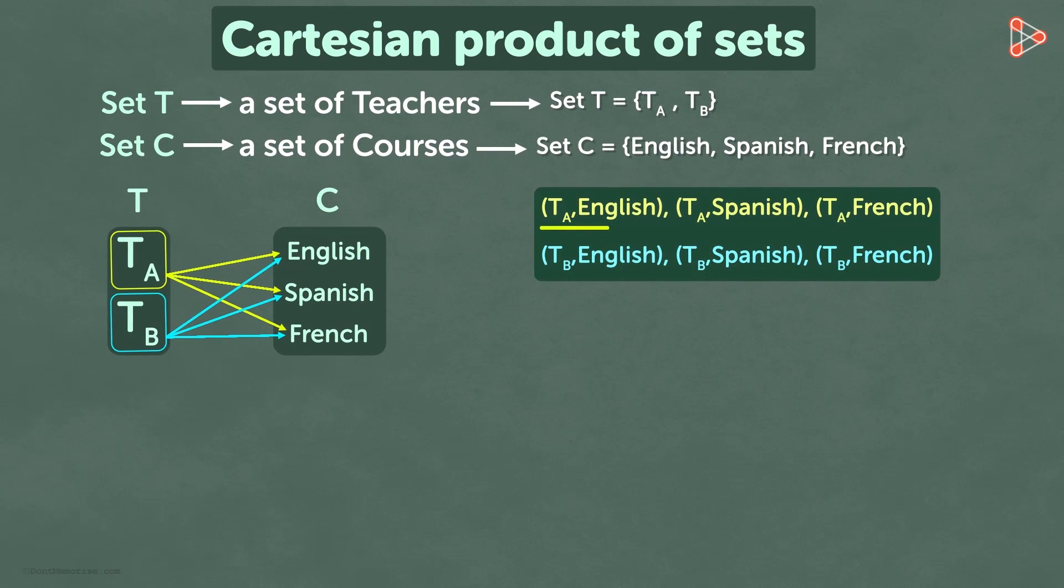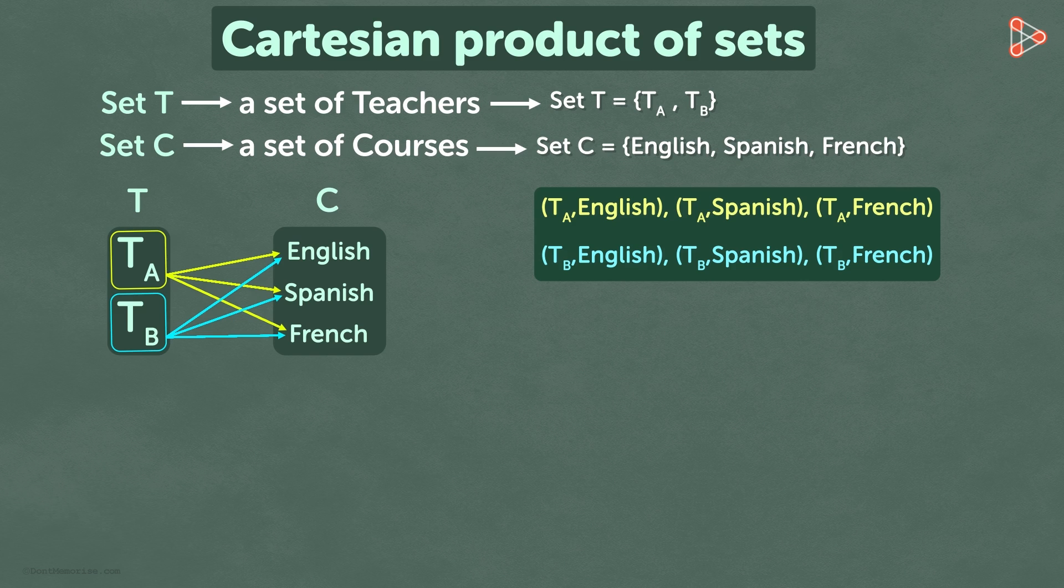So we get TA English, TA Spanish, TA French, TB English, TB Spanish, and TB French. This list is complete because we get all the possible ways in which every teacher in set T teaches every course in set C.